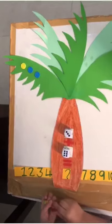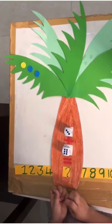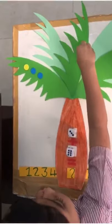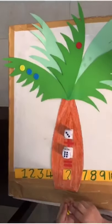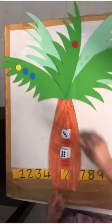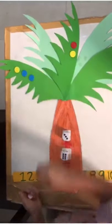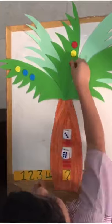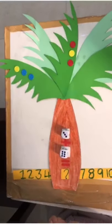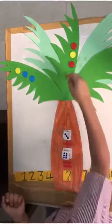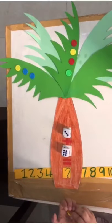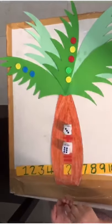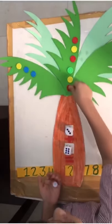Then the other leaf, we want to put 6. 1, 2, 3, 4, 5, 6.